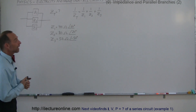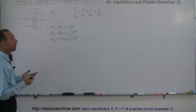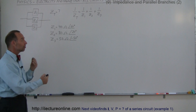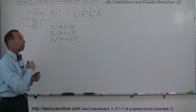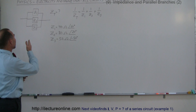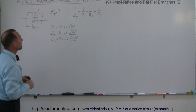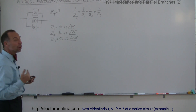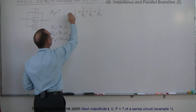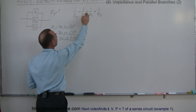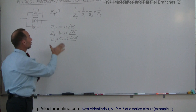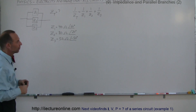Welcome to our lecture. Here we have another example of how to use impedances and the calculations with a parallel branch system. In this case we're going to have three parallel branches Z1, Z2, and Z3. We know that one over the total impedance equals one over Z1 plus one over Z2 plus one over Z3, and these are the three impedances we're going to work with.